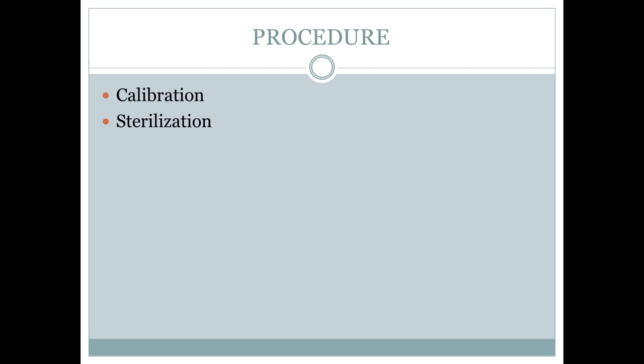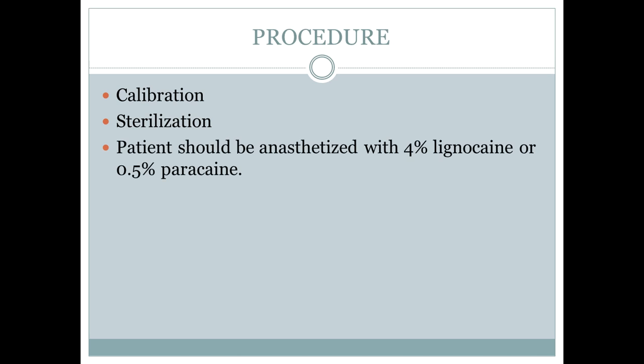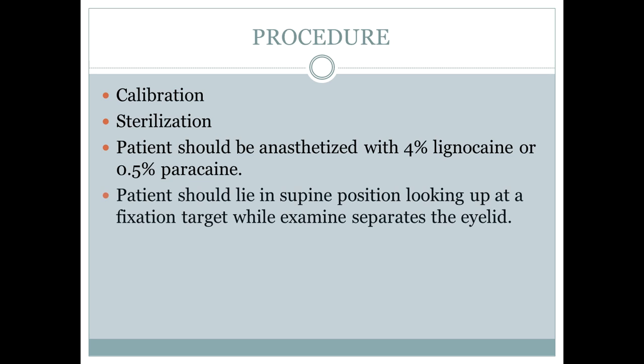Before doing the procedure, you have to anesthetize the patient with local anesthetic drugs. You can use 4% lignocaine or 0.5% paracaine. After a few minutes of instilling the anesthetic, make the patient lie in a bed and tell the patient to look up at a fixation target, or you can ask the patient to raise their thumb and use it as a fixation target.